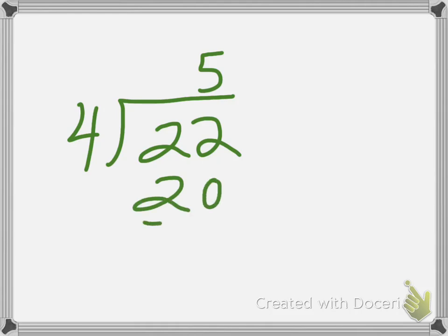So we have 22 divided by 4, which equals 5.